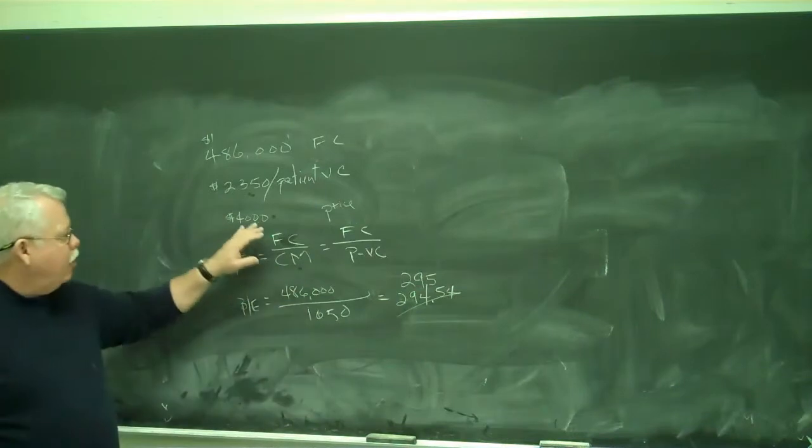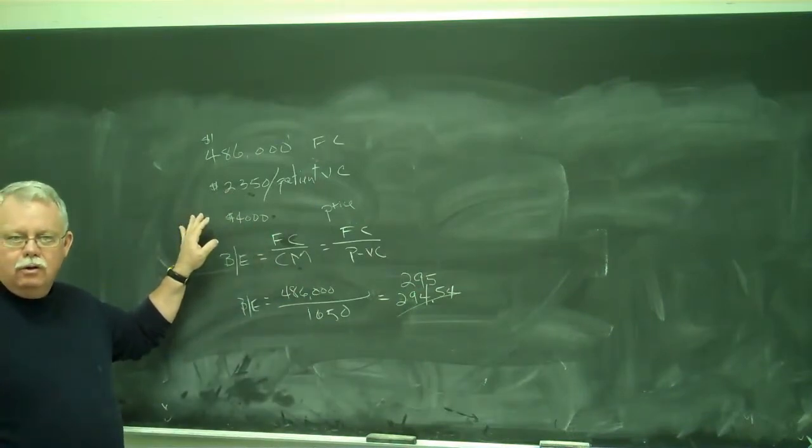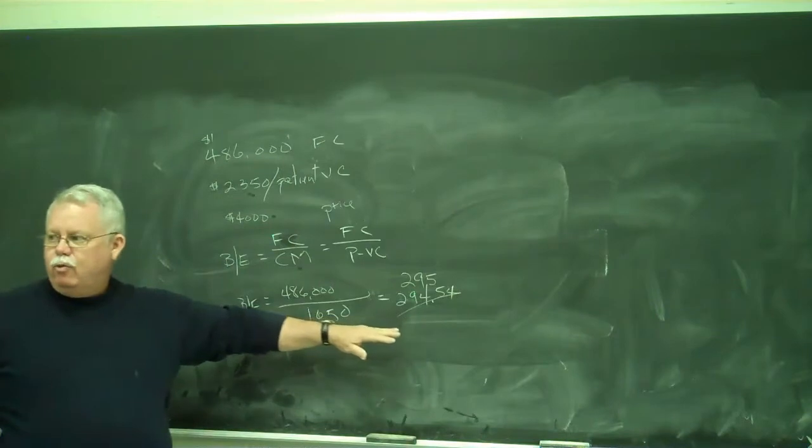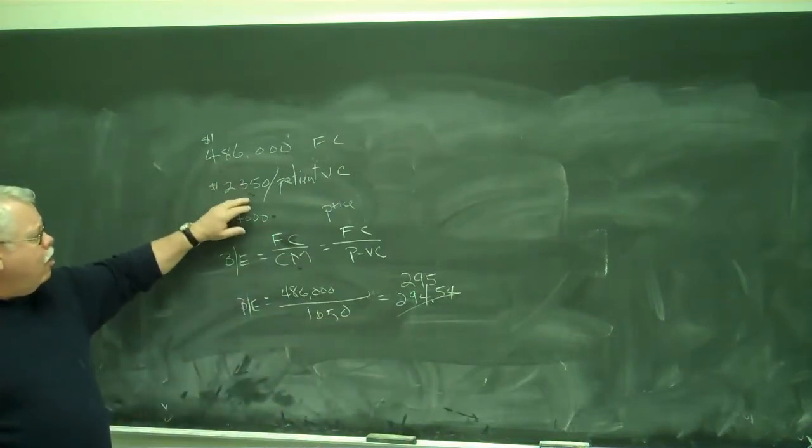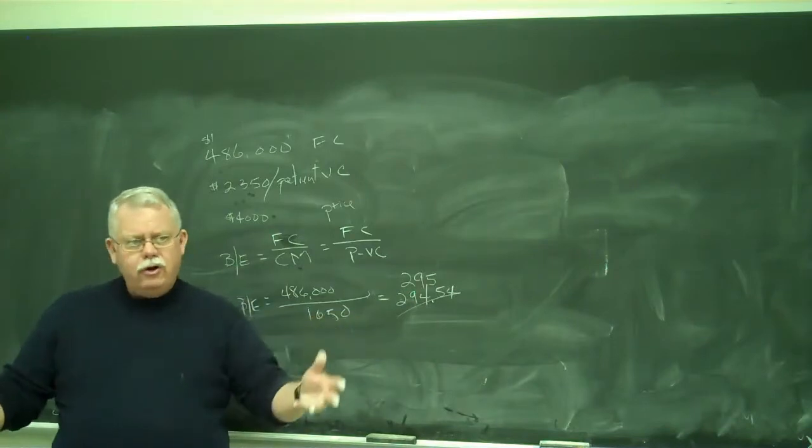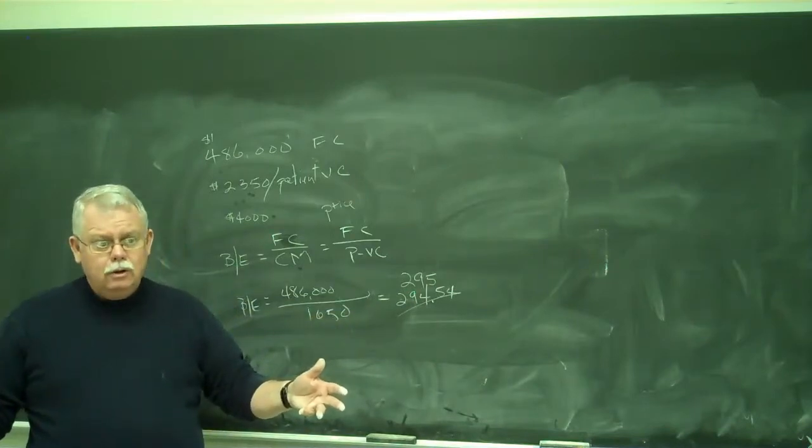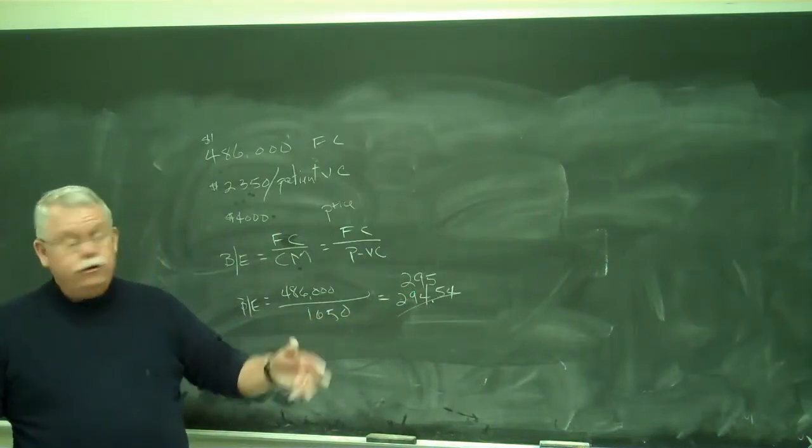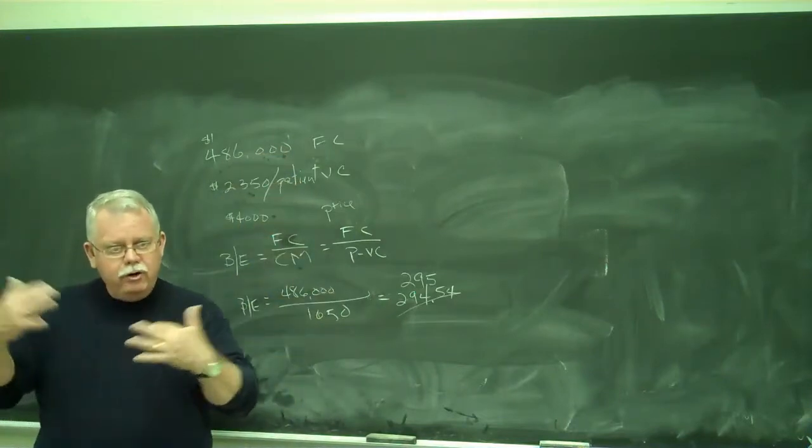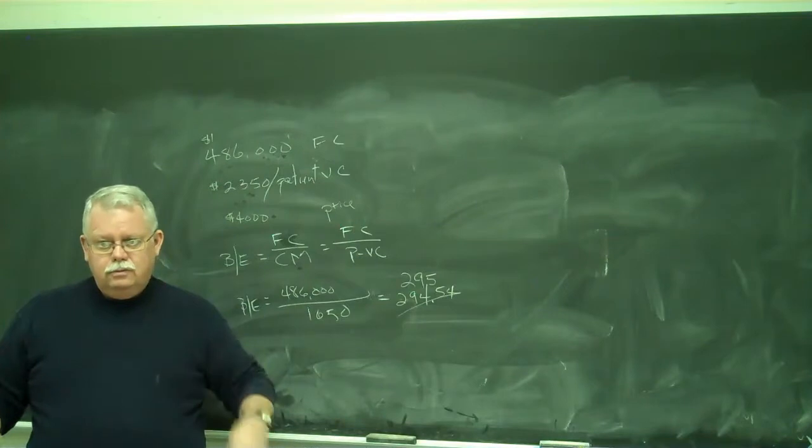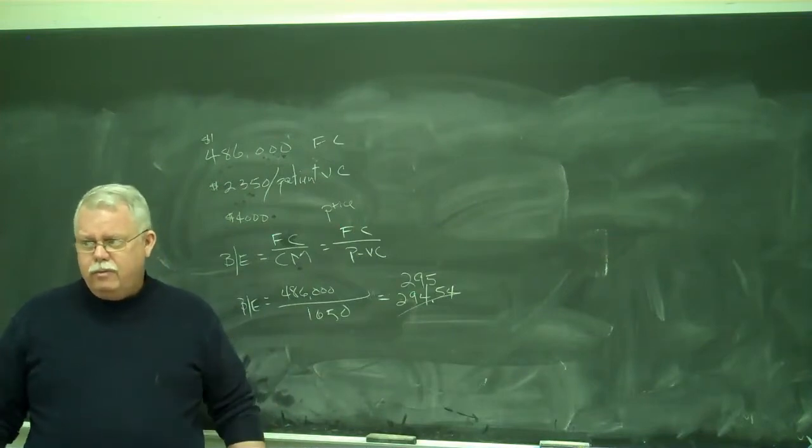And so then we can ask questions. What if we raise the price to $4,200? That would change our break even point. We could get by with fewer customers. What if we said, well, these are our costs, but we also want to make $50,000 a year in profit. Well, that becomes another fixed cost. Add that up here and recalculate. And so I want you to be ready to do those. Questions on those? Anybody?